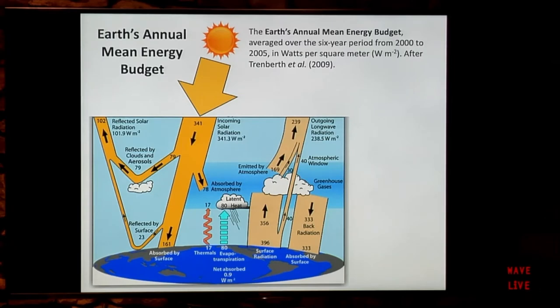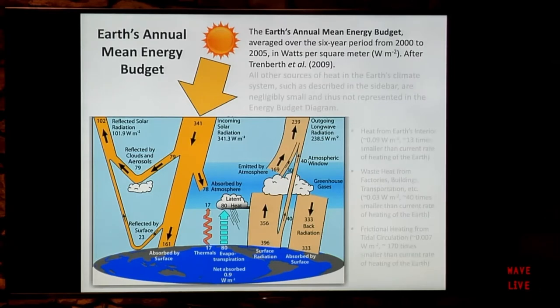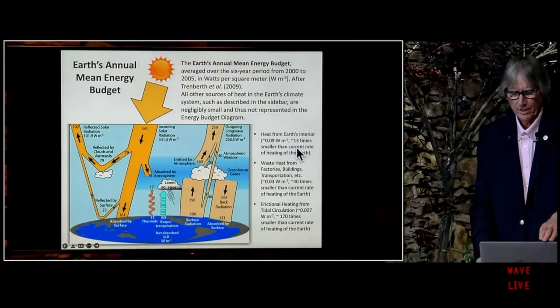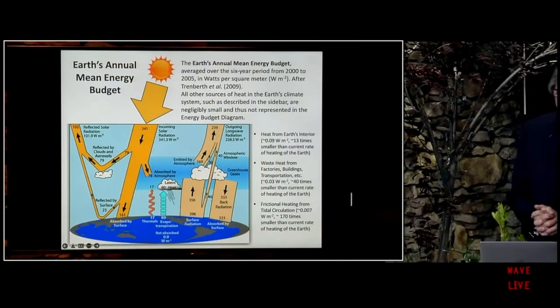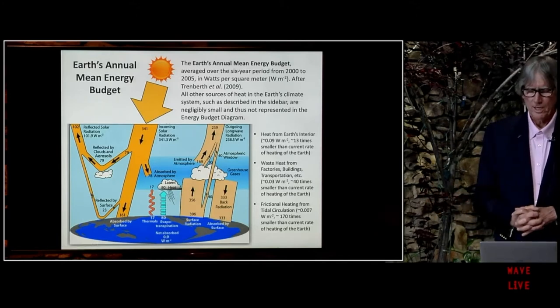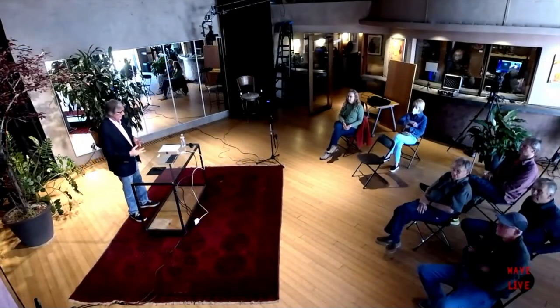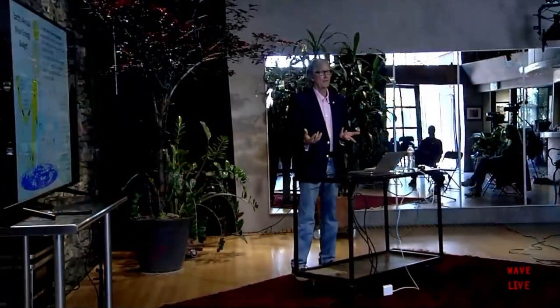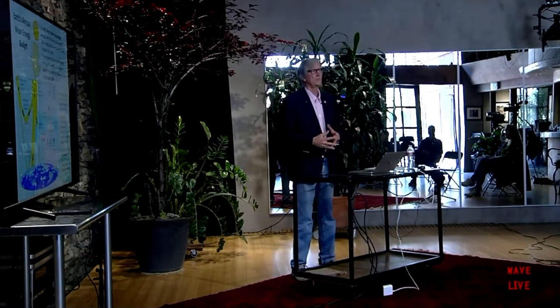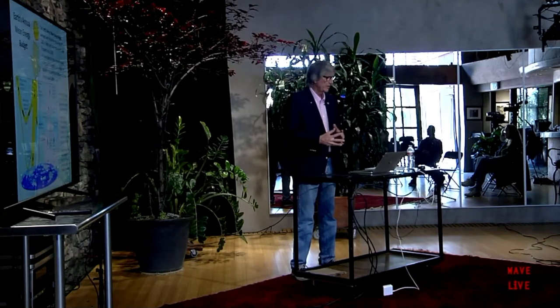You may have a couple of questions. The first is: what about other sources of heat? What about heat from the earth's interior? It turns out it's negligibly small — about 13 times smaller than the current rate of heating of the earth. What about waste heat from factories, buildings, and transportation? It's about 40 times smaller. What about frictional heating from tidal circulation? It's about 170 times smaller. Everything you can think of as a potential other source of heat is really, really small compared to the current rate of heating of the earth, so we can neglect them.